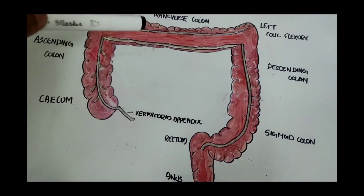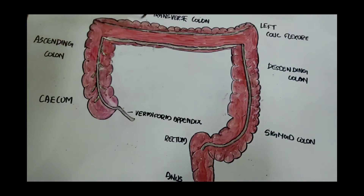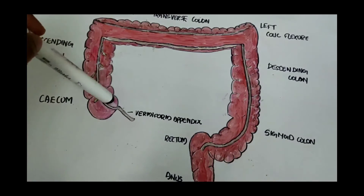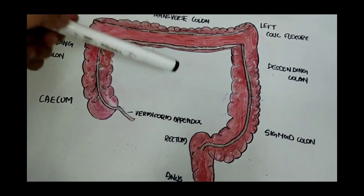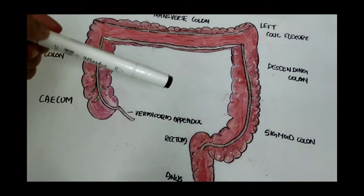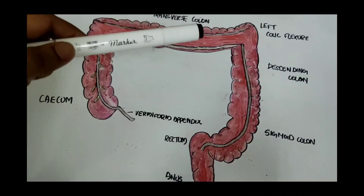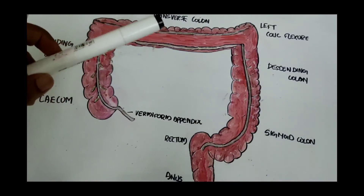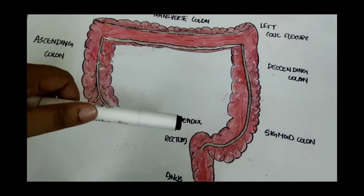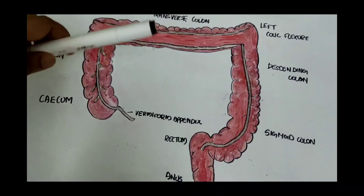The lymphatic drainage of the large intestine is through the epicolic lymph nodes, the paracolic lymph nodes, the intermediate nodes, and the terminal nodes.